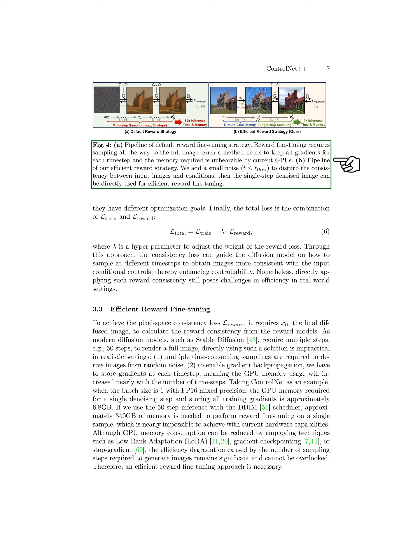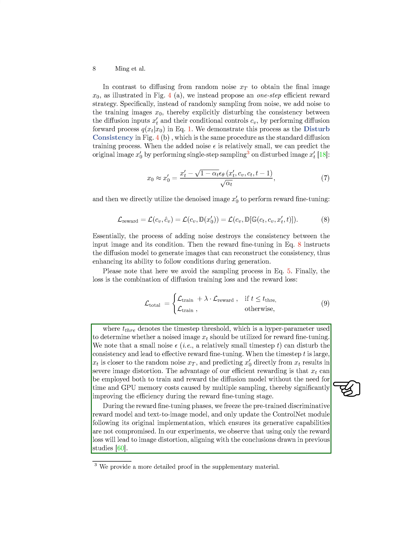The total loss combines training loss and reward loss, where a time-step threshold T-3 determines if a noised image X-T should be used for reward fine-tuning. Our efficient rewarding method allows us to train and reward the model using X-T without the time and GPU memory costs of multiple samplings, significantly improving efficiency. We freeze the pre-trained discriminative reward model and text-to-image model during reward fine-tuning, only updating the ControlNet module to maintain generative capabilities.